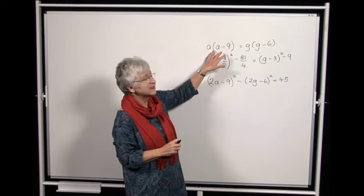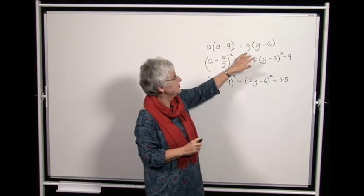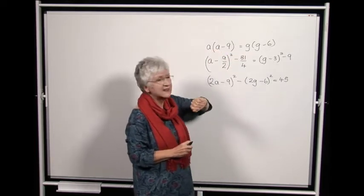In some ways this question is a little more familiar than the others. If we look at solving this by algebra and let Aries' first number be a and his second a minus 9, and Grace's numbers be g and g minus 6, then we can set up an equation for the product. We have a times a minus 9 equals g times g minus 6.